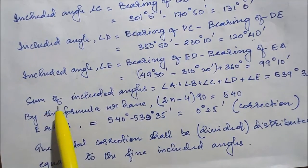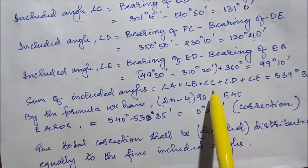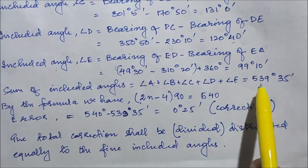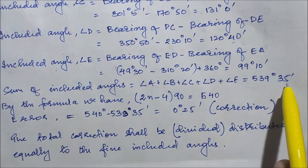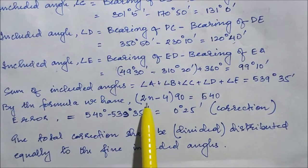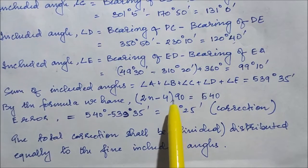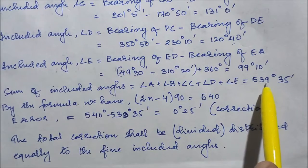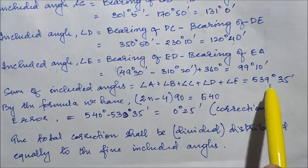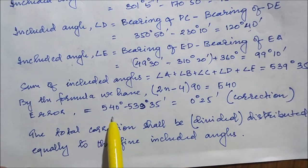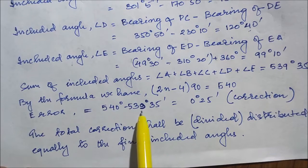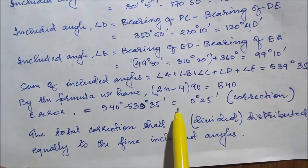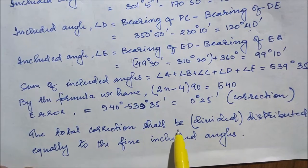The sum of the included angles A + B + C + D + E comes out to be 539°35′. However, by the formula (2n − 4) × 90° for a five-sided traverse, the correct sum should be 540°. The error is therefore 540°00′ − 539°35′ = 0°25′. This total correction shall be distributed equally among the 5 included angles.